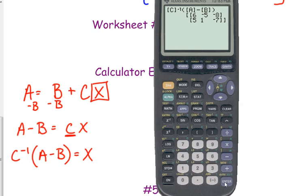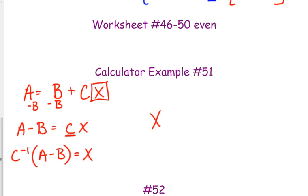And that is the answer. That is the matrix X. Matrix X is 6, negative 5, negative 8, 5, 1, and negative 7.